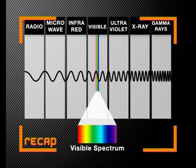Welcome to the fourth lesson in our series, Investigating Electromagnetic Radiation. So far in the series, we have explored the properties of electromagnetic radiation. We have shown that there are different types of electromagnetic radiation described in the electromagnetic spectrum.